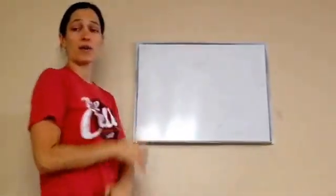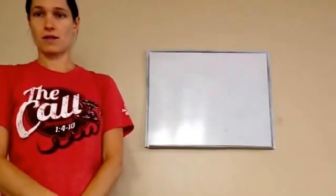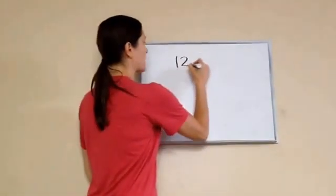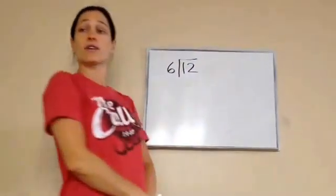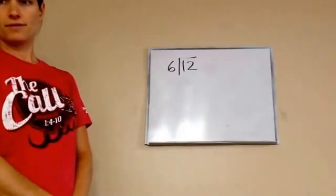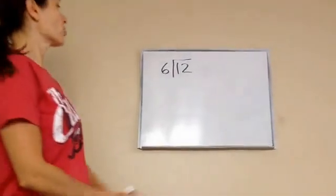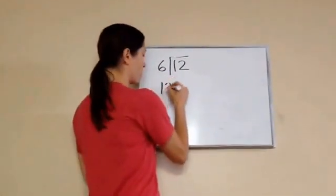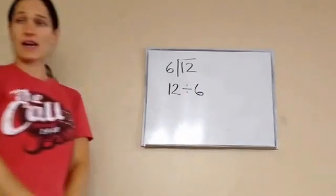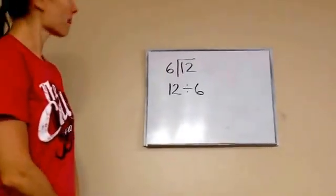12 divided by 6. Write it one way. Very good. So the first way he did was 12 divided by 6. Show me another way to do 12 divided by 6. The biggest number always goes first. 12 divided by 6. That's how you would say it. Excellent job, Eli.